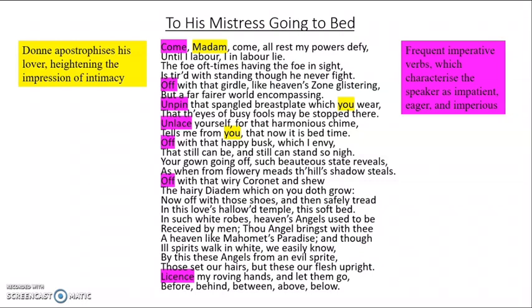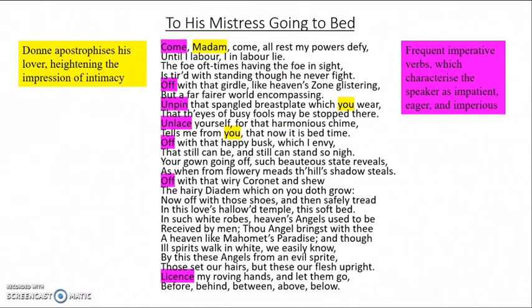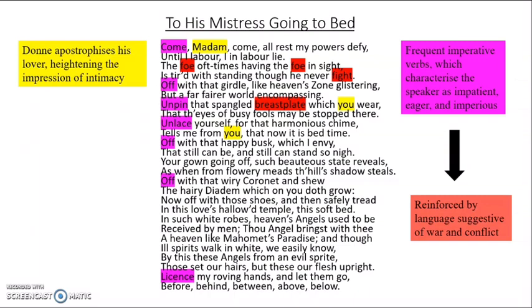This impression is heightened by the many possessive pronouns which abound throughout the poem — words such as 'my' and 'mine.' The speaker likens his lover to a mysterious newfound land which he is in the process of colonising and converting into his kingdom. It's worth briefly noting that this is potentially problematic for feminist critics on account of the female lover being objectified and possessed. The frequent use of military vocabulary — words such as 'foe,' 'fight,' and 'breastplate' — heightens this impression of command, colonisation and control.